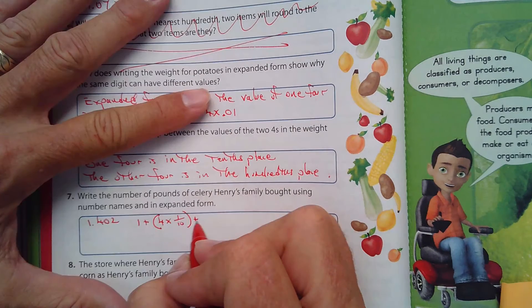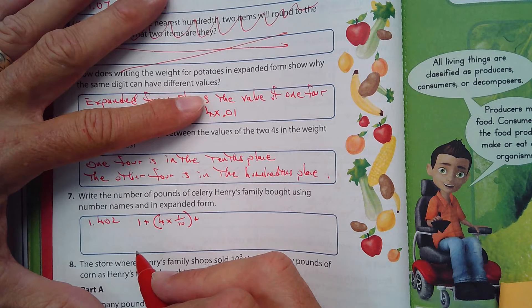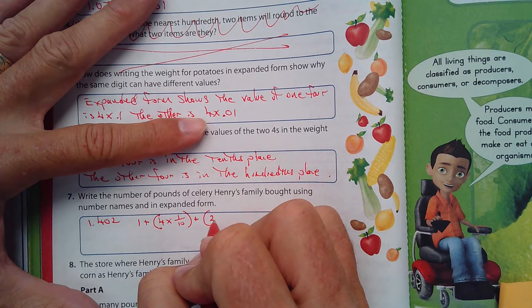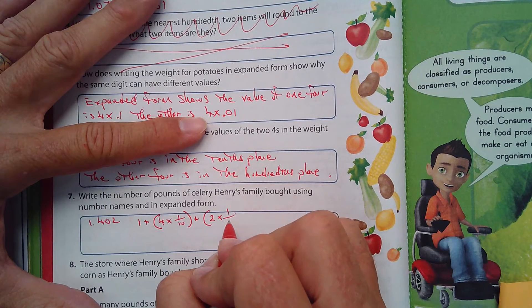Plus, and there's nothing in the hundredths place, so we won't even worry about that. Plus, and then in parentheses, 2 times, what, 1 over 1,000.